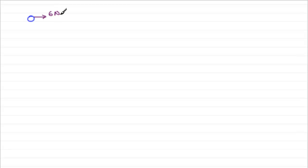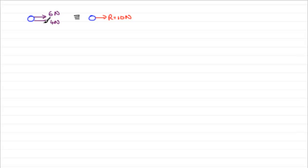Suppose we had a particle with a couple of forces acting on it — say 6 newtons and another one of 4 newtons. What's this going to be equivalent to? We could take our particle and it would be equivalent to what we call a resultant force, let's call it R, of 10 newtons. So R equals 10 newtons. We can replace these two forces with one force, and we'll find this very useful in problems.